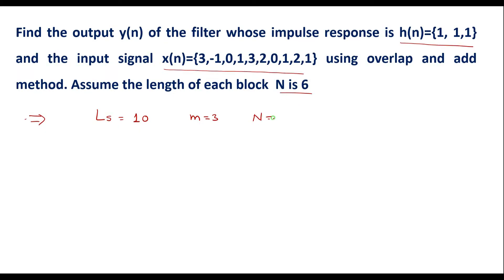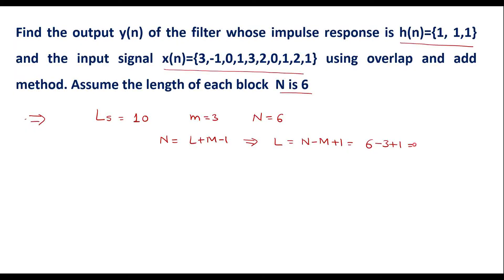N is equal to 6. We know that N equals L plus M minus 1, so we can find L. Therefore, L equals N minus M plus 1, that is 6 minus 3 plus 1, which equals 4. So L equals 4.